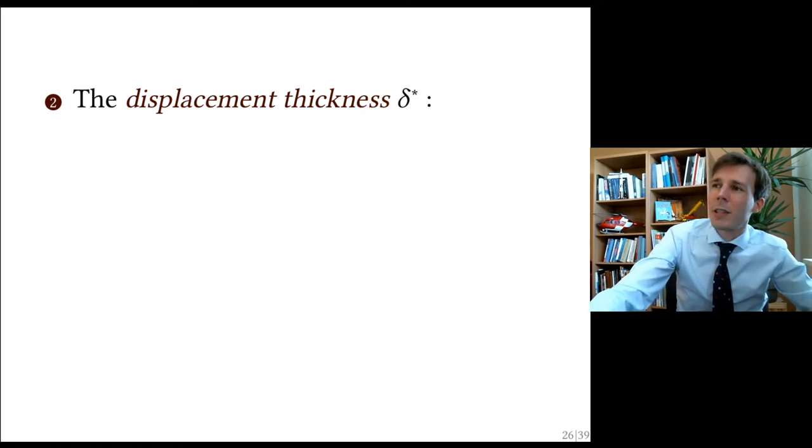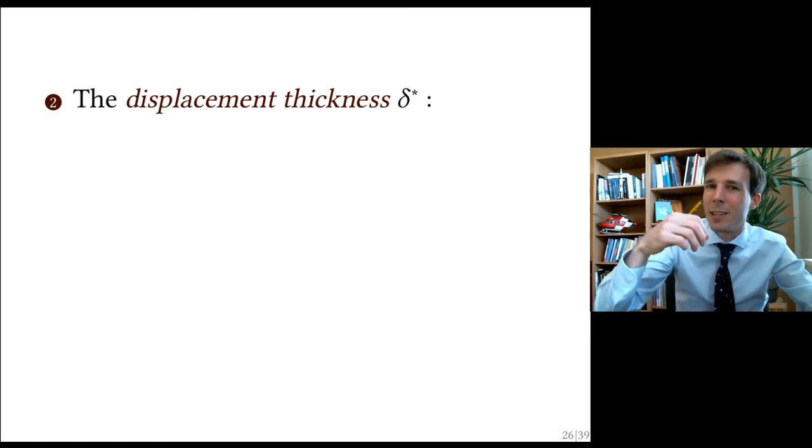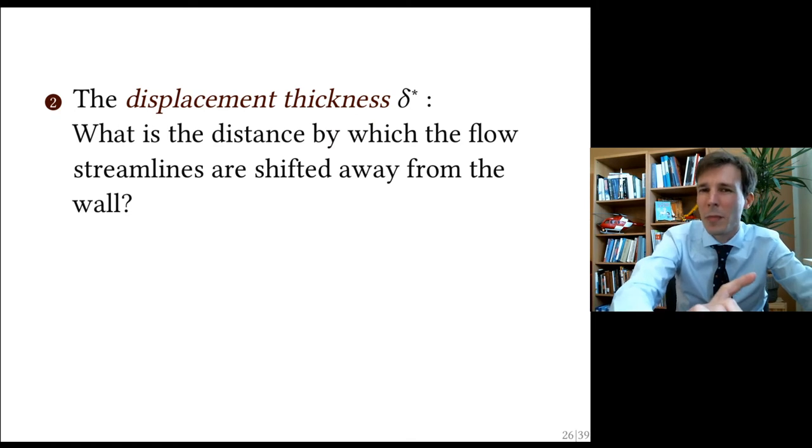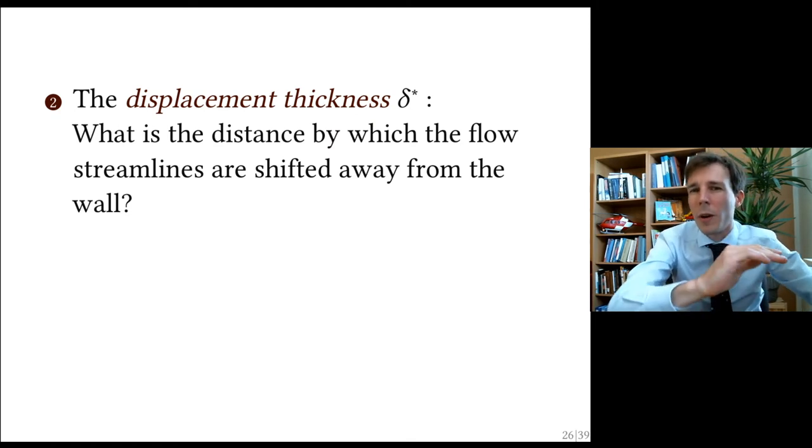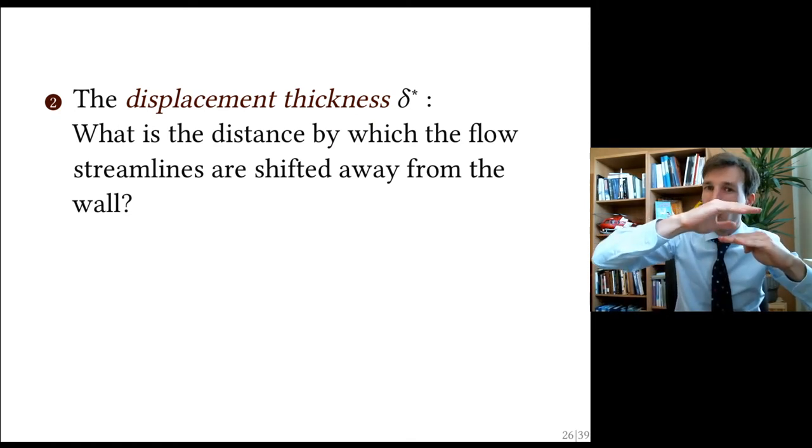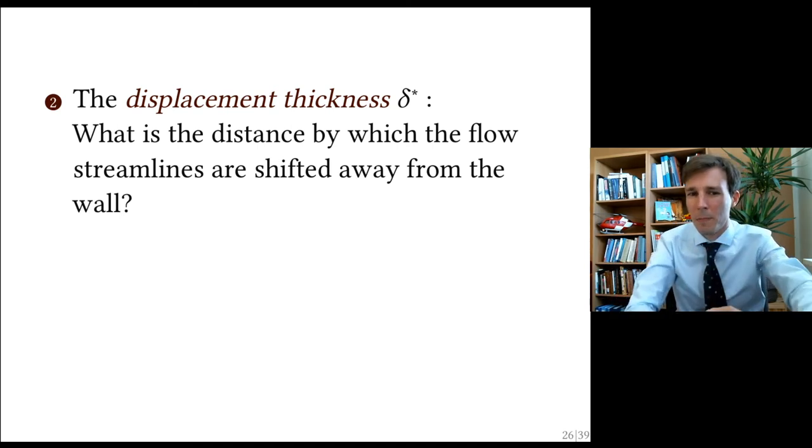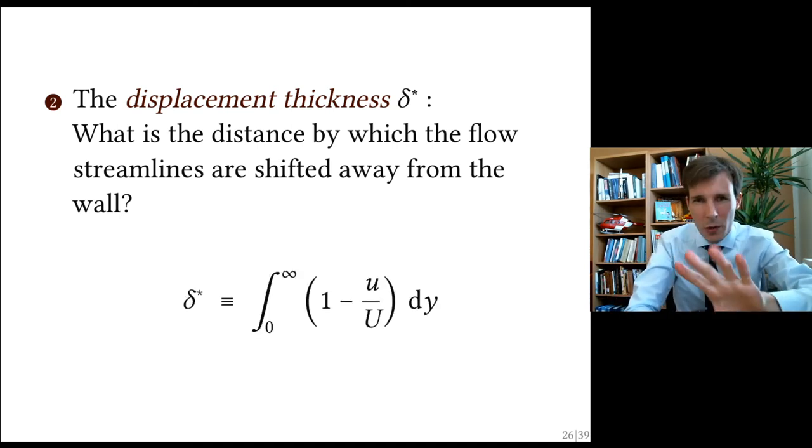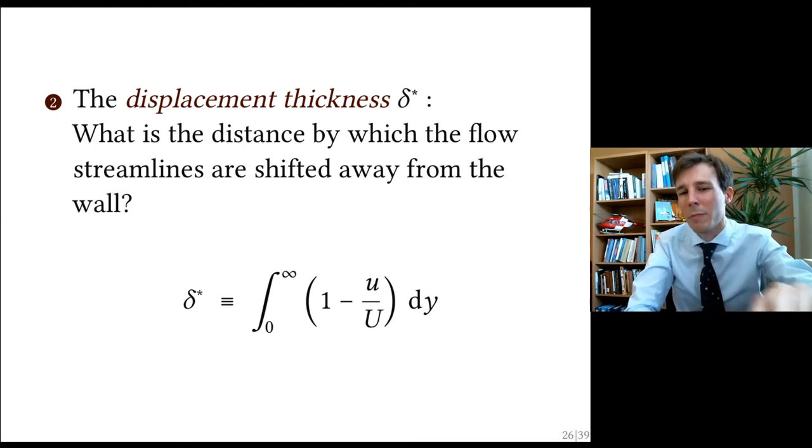Another alternative to this is the delta star. It is a displacement thickness. And the displacement thickness is the distance by which the flow is pushed away from the wall because of the presence of the boundary layer. And it's calculated using this equation. But let's not focus on this right now. Let me show you what I mean by the displacement thickness.